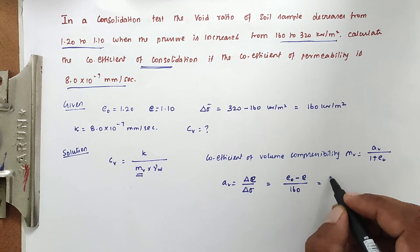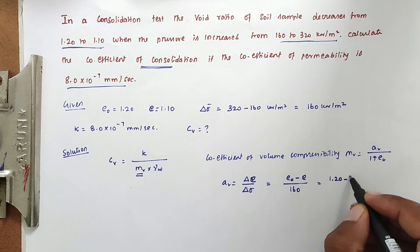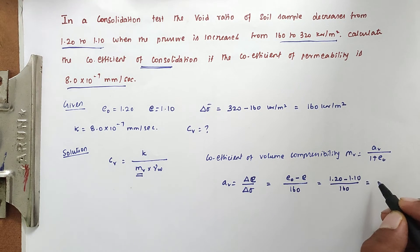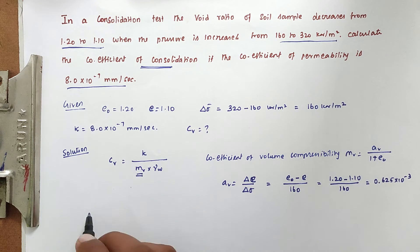So now e₀ value is 1.20 minus 1.10 divided by 160. Solving this we got the value of 0.625 × 10^-3.